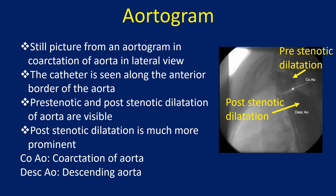This is a still picture from an aortogram in coarctation of aorta in lateral view. The catheter is seen along the anterior border of the aorta. Pre-stenotic and post-stenotic dilatation of aorta are visible, with post-stenotic dilatation much more prominent. COAO indicates coarctation of aorta, and DISIO indicates the descending aorta.